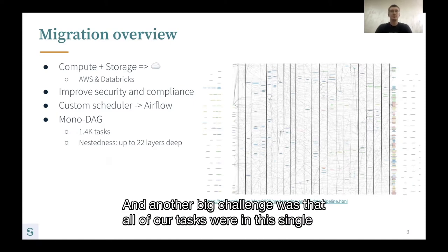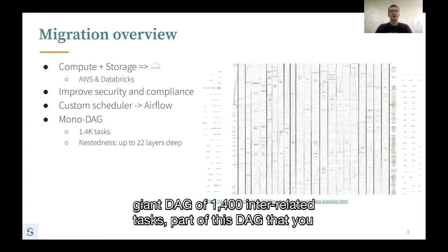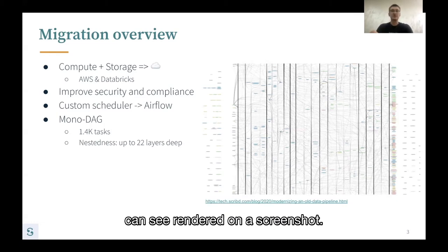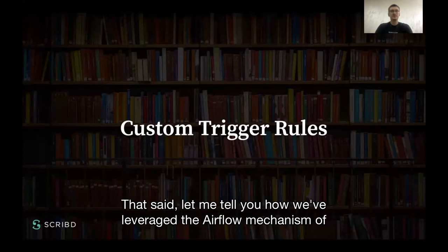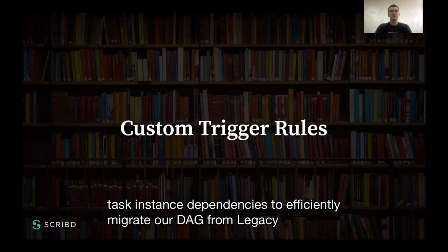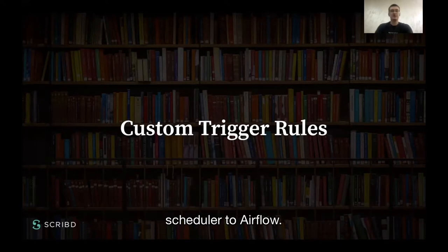Another big challenge was that all of our tasks were in this single giant deck of 1400 interrelated tasks — part of which you can see rendered on a screenshot. Those black lines are bundles of directed dependency edges. Let me tell you how we've leveraged the Airflow mechanism of task instance dependencies to efficiently migrate our deck from the legacy scheduler to Airflow.